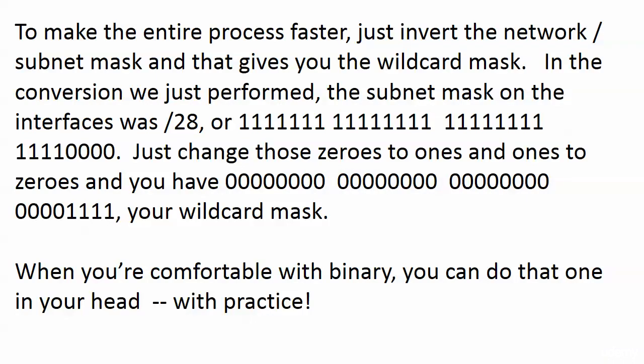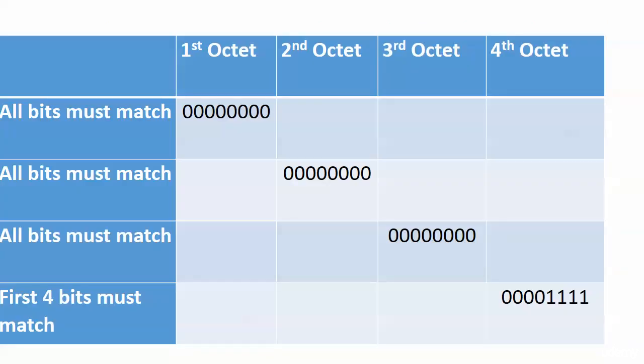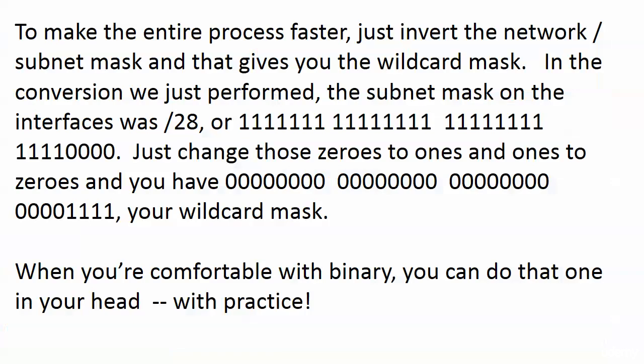To make the entire process faster, just take the subnet mask you're given and invert it — that gives you the wildcard mask. They gave us slash 28; we know that's 28 ones followed by four zeros. Invert it: 28 zeros at the beginning and four ones at the end. With practice you'll know right away that a slash 28 subnet mask becomes a wildcard mask of 0.0.0.15 without having to write it all out.